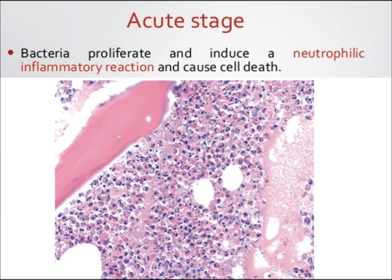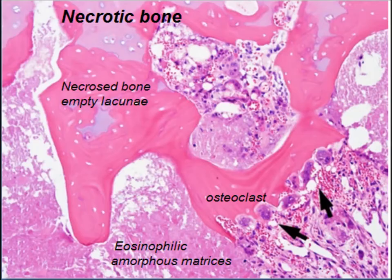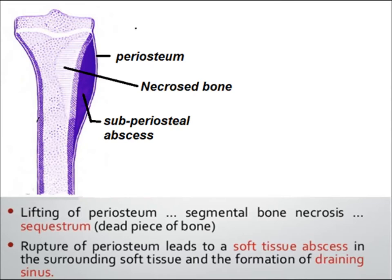In the acute stage, osteomyelitis is characterized by infiltration of the bone with a neutrophilic inflammatory reaction. This causes death of bone tissue and necrotic bone is present. Necrotic bone shows empty lacunae, death of osteocytes, and eosinophilic amorphous matrix with osteoclasts around the dead bone. There is lifting of the periosteum and segmental bone necrosis.